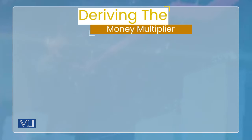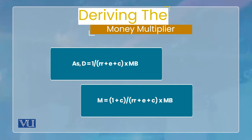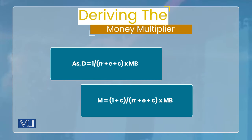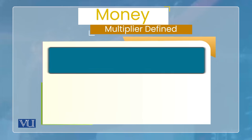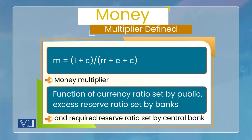اب D کا formula جو ہم پہلے derive کر چکے تھے وہ یہاں substitute کر دیتے ہیں۔ تو final money supply formula آ گیا: M = [(1 + c) / (rr + e + c)] × MB۔ یہاں M money supply ہے، MB monetary base ہے، اور درمیان میں یہ جو ratio لکھا ہوا ہے — (1 + c) / (rr + e + c) — یہ money multiplier (m) ہے۔